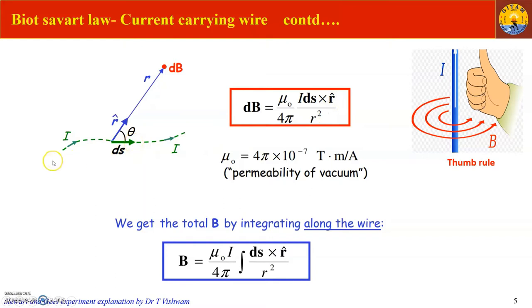If you want to calculate the magnetic field for the entire wire, we integrate over the complete length with respect to the dimensions of the wire: B = (μ₀/4π) ∫ ds × r̂ / r².